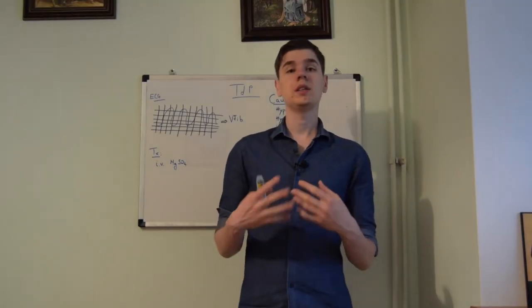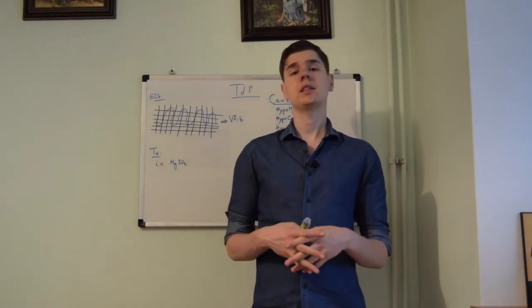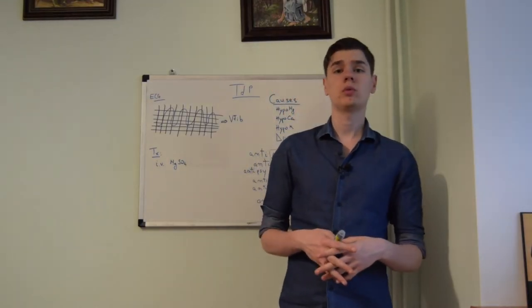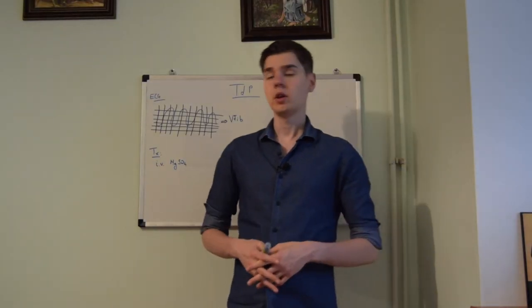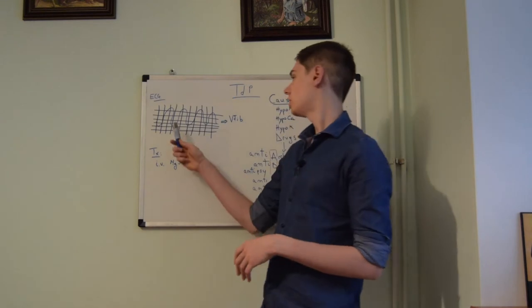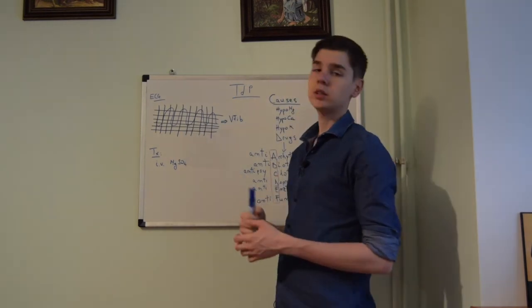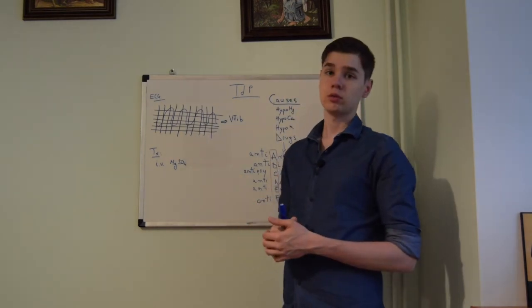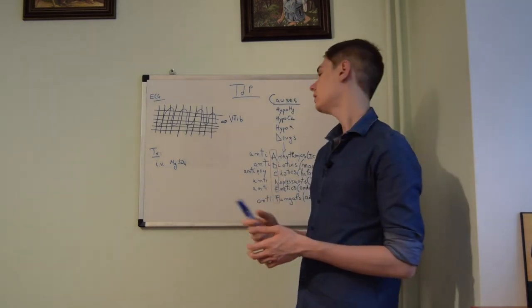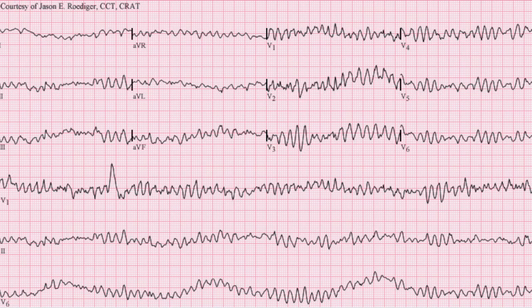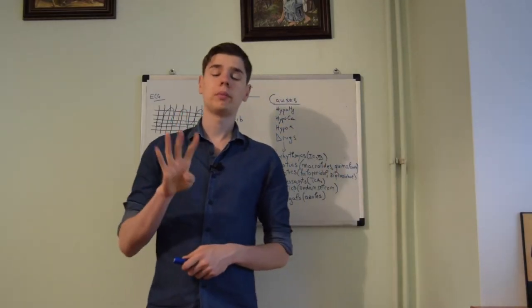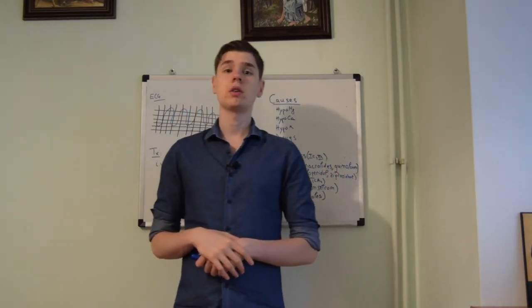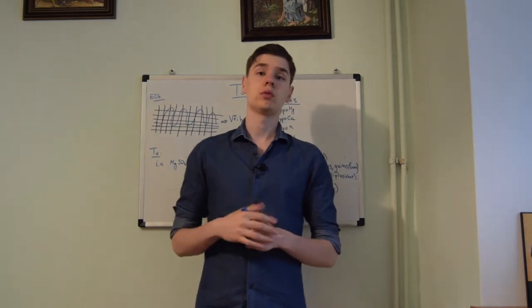Torsades de Pointes is seen as a sinusoidal wave on the EKG. Untreated, Torsades de Pointes will develop into ventricular fibrillation. There are four major causes of Torsades de Pointes.